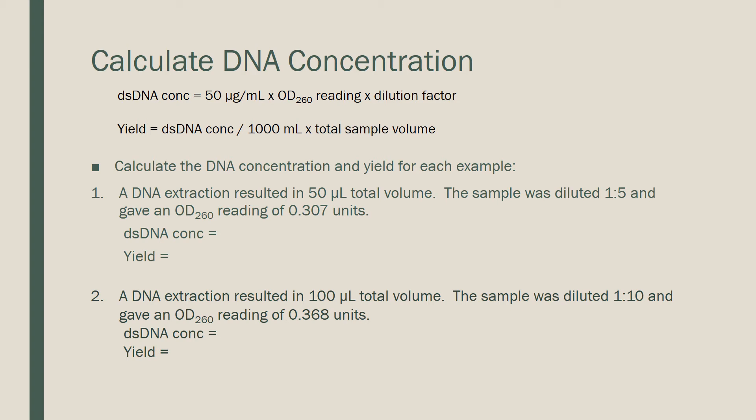For yield, we take the double-stranded DNA concentration we just calculated, divide by 1000 to convert micrograms per milliliter to micrograms per microliter, and multiply by the total volume of our sample. This tells us how much DNA we have. For this course, we are going to multiply out to just micrograms of DNA, unless I tell you otherwise, meaning we will multiply by our total sample volume.